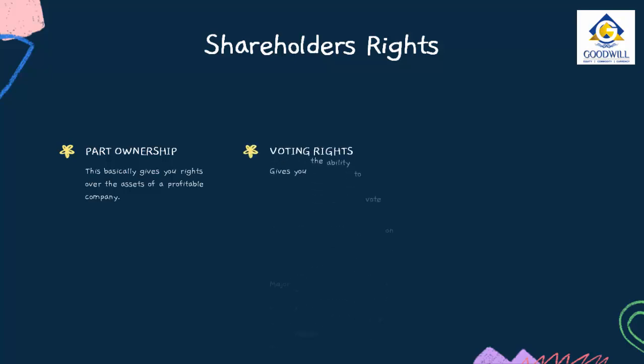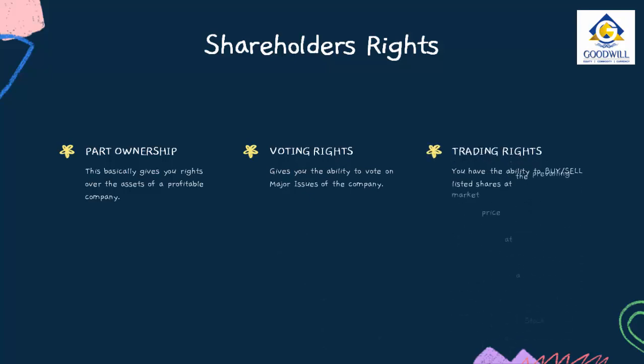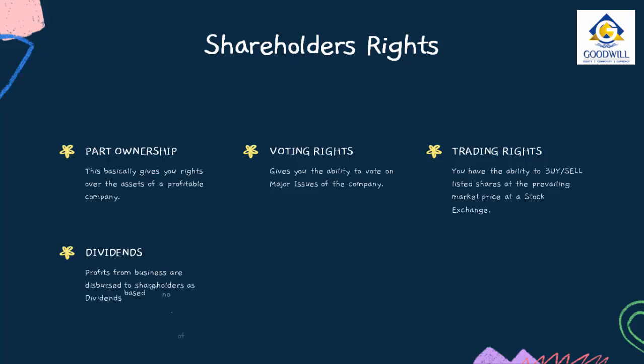Next, you have voting rights, which gives you the ability to vote on major issues of the company. Next, trading rights give you the right to buy and sell listed shares of that company on the stock exchanges at the prevailing market price. Next, shareholders are entitled to dividends, which are paid out from the profits a company makes from its businesses.